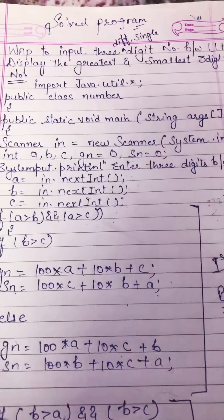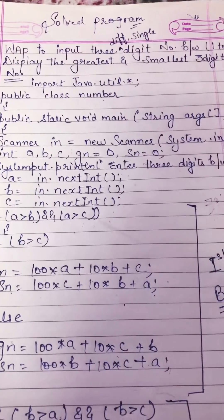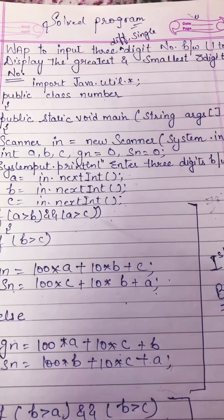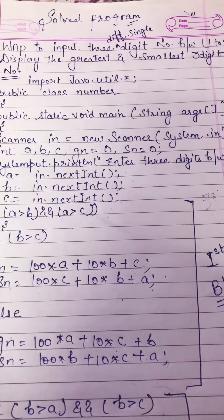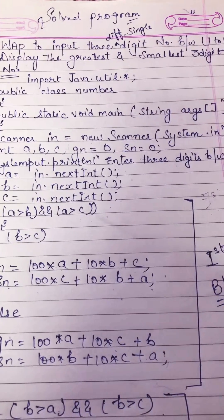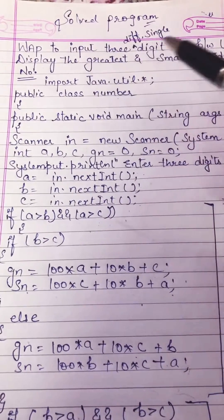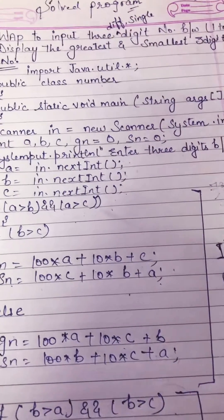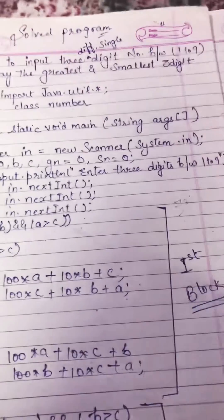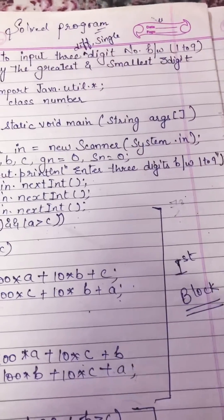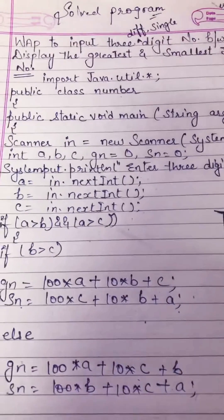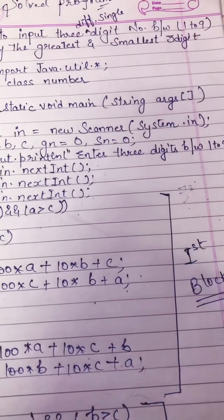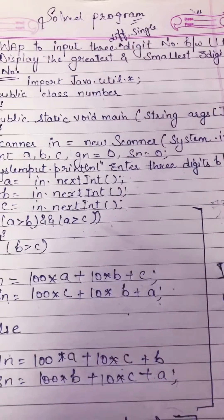Dear students, now we are discussing your solved programming of lesson number 7, conditional control statements. Your first program: write a program to input 3 different single digit numbers between 1 to 9 and display the greatest and smallest 3-digit number.